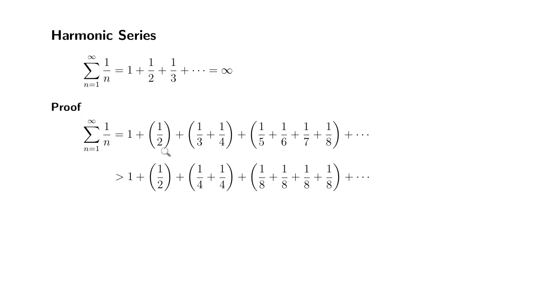And also we need to pay attention to each group. The sum of the terms in each group is always 1 half. You have 1 half by itself here, and 1 quarter plus 1 quarter gives you 1 half. And then you have four 1 eighths together. That's going to give you 1 half.